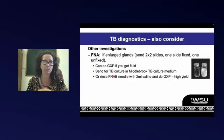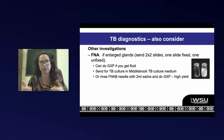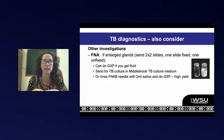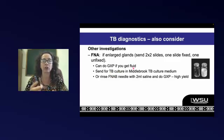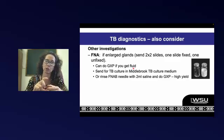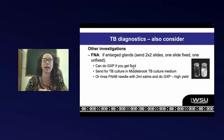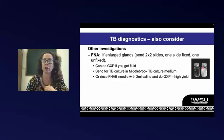If there are any enlarged lymph nodes, please put a needle in them. If you get fluid back, excellent — send it for GeneXpert. If you're only getting cells and making slides, a very useful tip is to take that same needle and rinse it with 2 mL of saline, then send that for GeneXpert. Put 2 mL of saline in a small bottle, draw it up through the needle, rinse it out back into the bottle, and send it for GeneXpert. Some labs also have Middlebrook TB culture medium — you can rinse your needle into that if you want to send a TB culture.